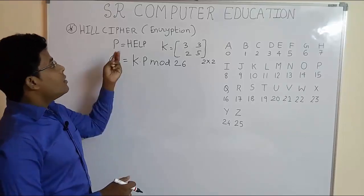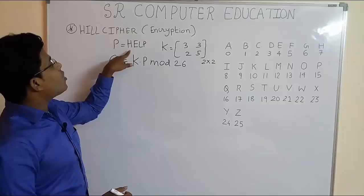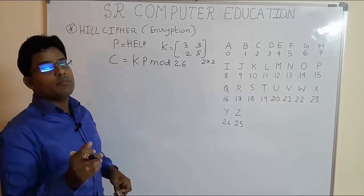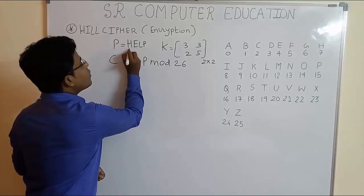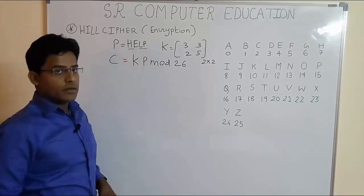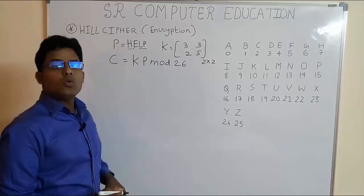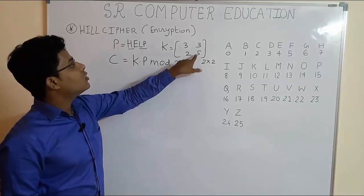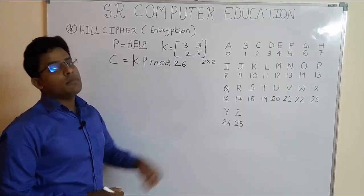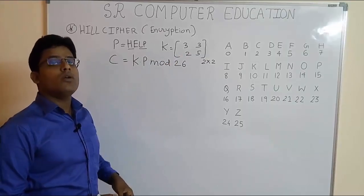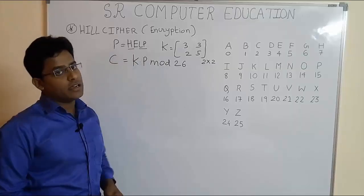That means we have to do the encryption 2 times here. One for HE and another for LP. H and E, 2 characters at a time because we are given here 2 by 2 matrix. Suppose in examination 3 by 3 matrix is given, then you have to take 3 characters at a time.